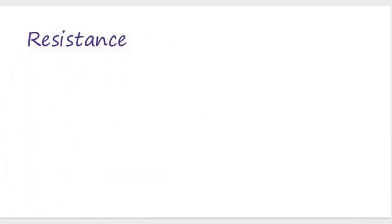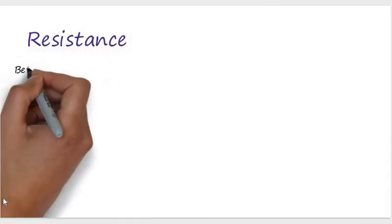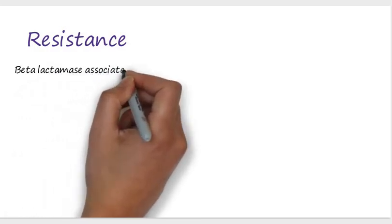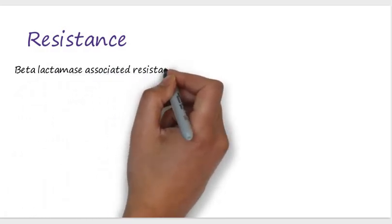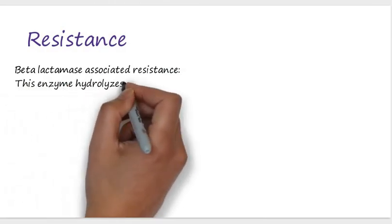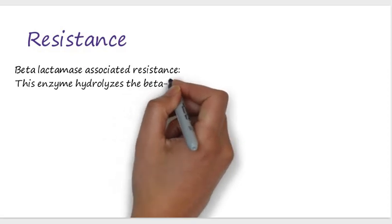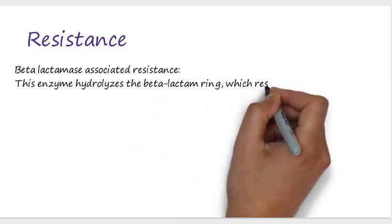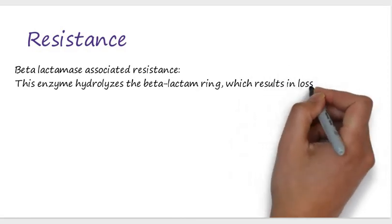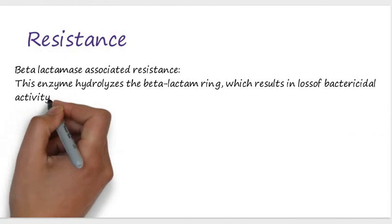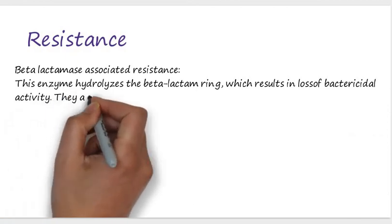Regarding resistance mechanisms of penicillin: the first is beta-lactamase-associated resistance. Beta-lactamase is an enzyme that bacteria produce which hydrolyzes the beta-lactam ring — the component essential for antibacterial activity — resulting in loss of bactericidal activity. Beta-lactamases are the major cause of resistance.